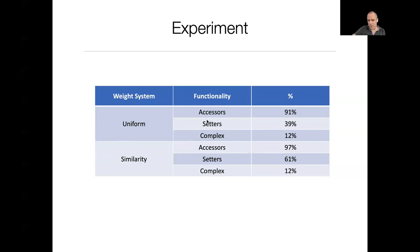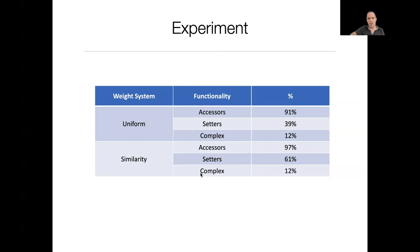The most interesting aspect is the complex methods. The genetic programming algorithm tries to generate the body of non-trivial functions, and we achieve a precision of 12%.